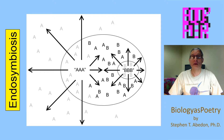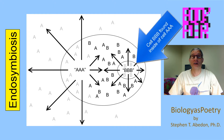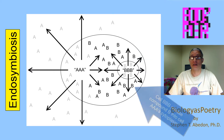Endosymbiosis can be viewed as a means by which the intimacy of microbial consortia is increased to the logical conclusion. Instead of having two cells adjacent to one another and sharing compounds across their adjacent membranes, instead you have one cell that's found inside of the other cell, and as a consequence, the compounds released from that cell go directly into the cytoplasm of the host cell.